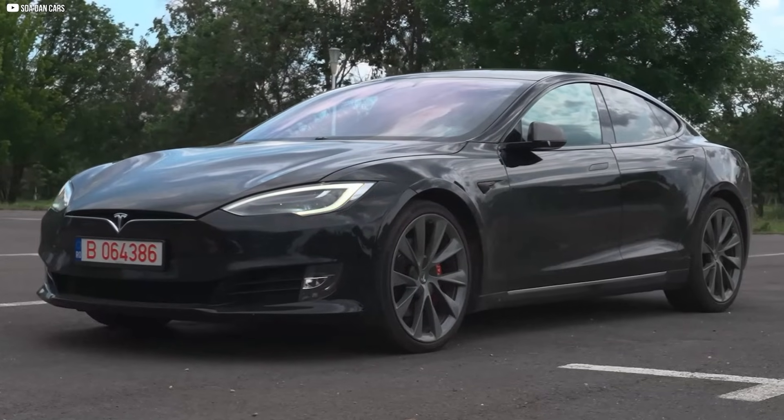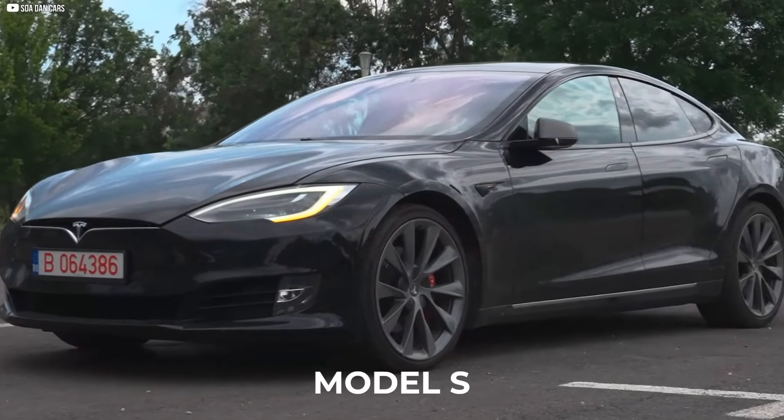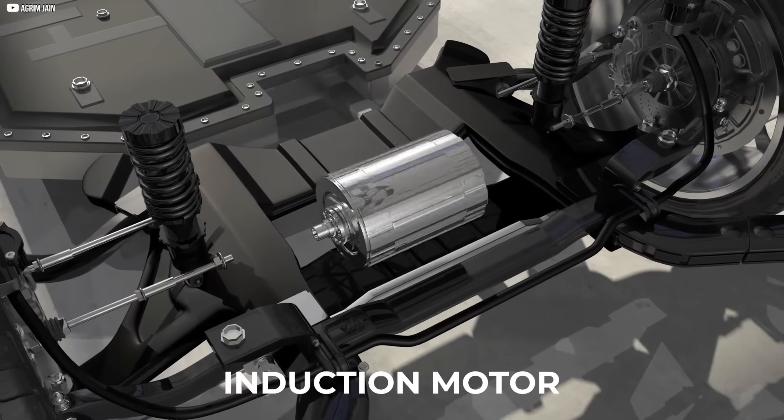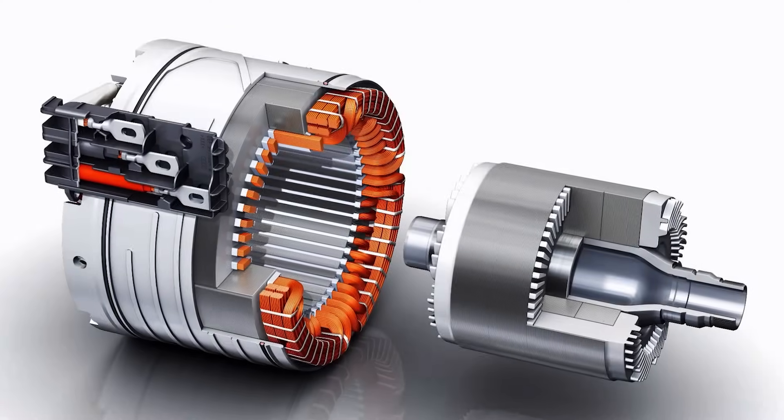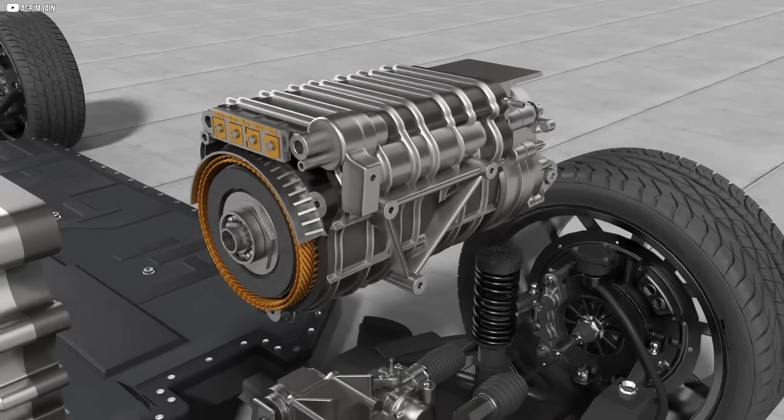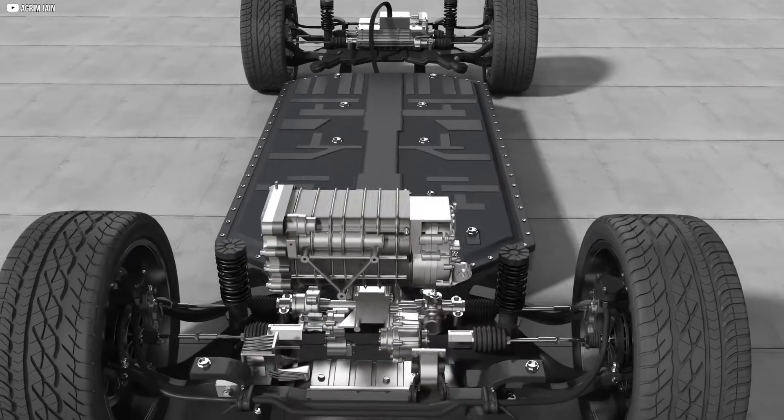Before this quiet shift happened, Tesla's flagship cars, especially the Model S, relied on a type of motor called the induction motor. It wasn't a new invention. In fact, it had been around for more than a century. Rugged, reliable, and relatively simple, it was the kind of machine engineers trusted.